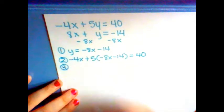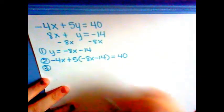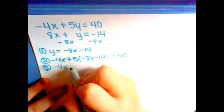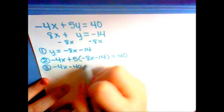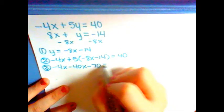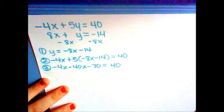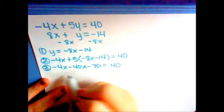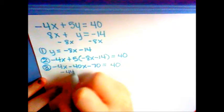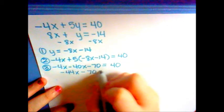Step 3. Now we put it all together. You get negative 4x minus 40x minus 70 equals 40. The negative 4x and the negative 40x become negative 44x minus 70 equals 40.